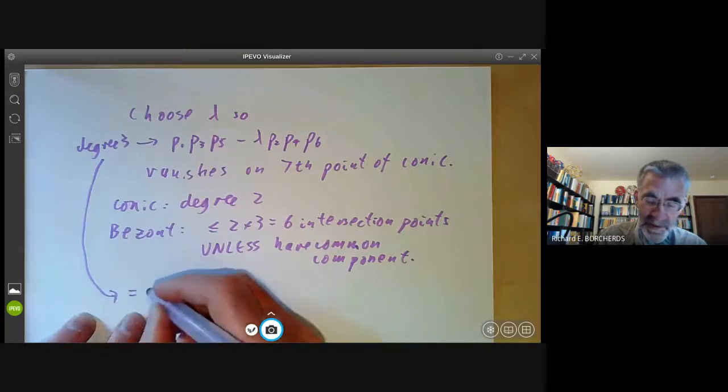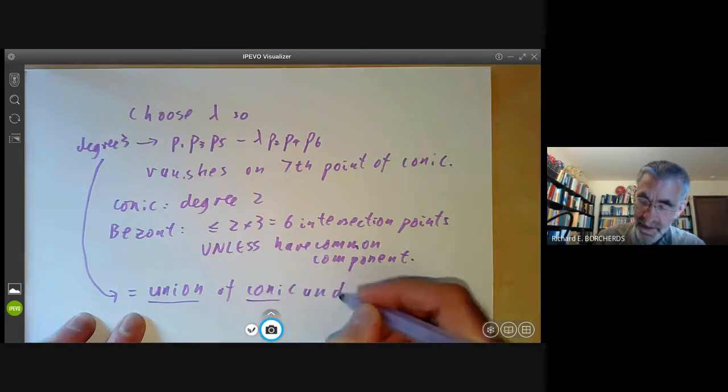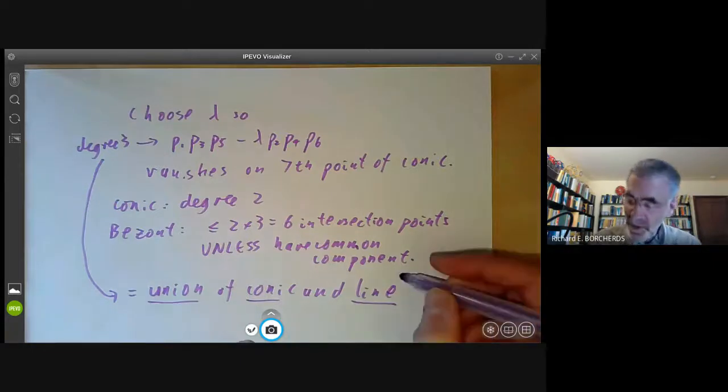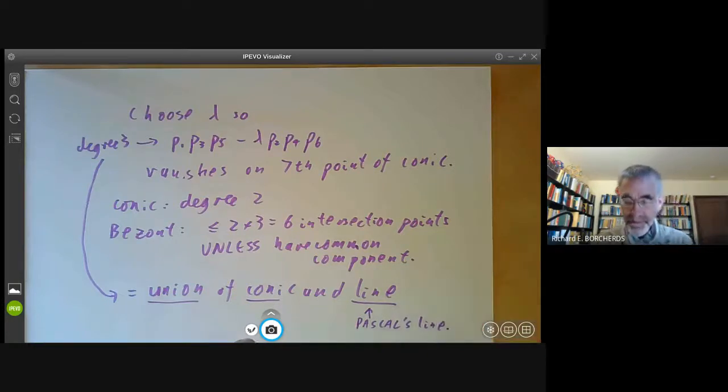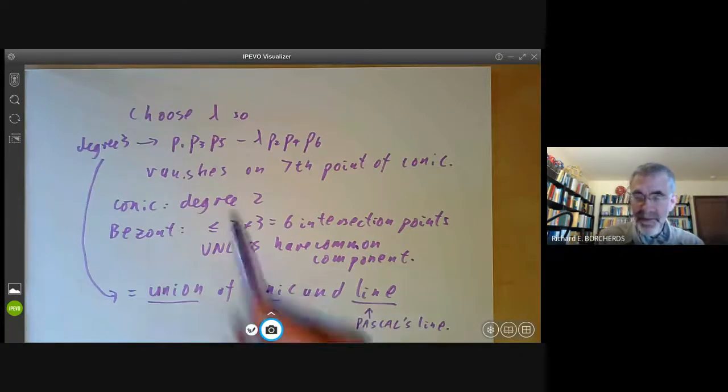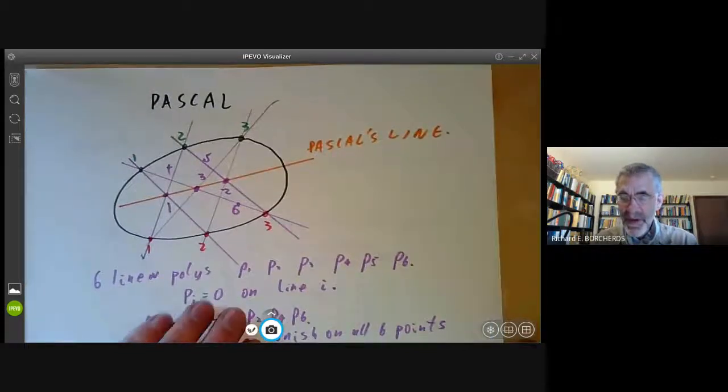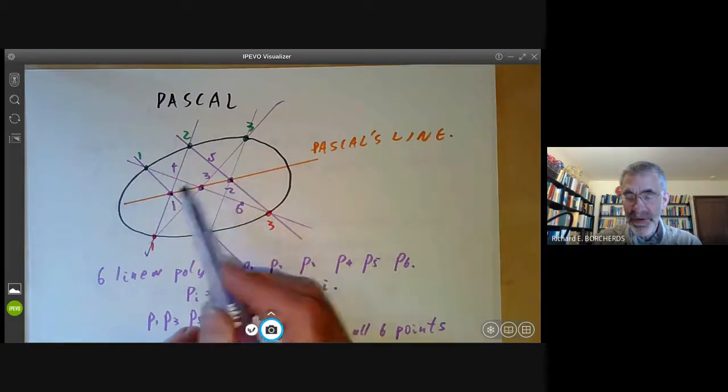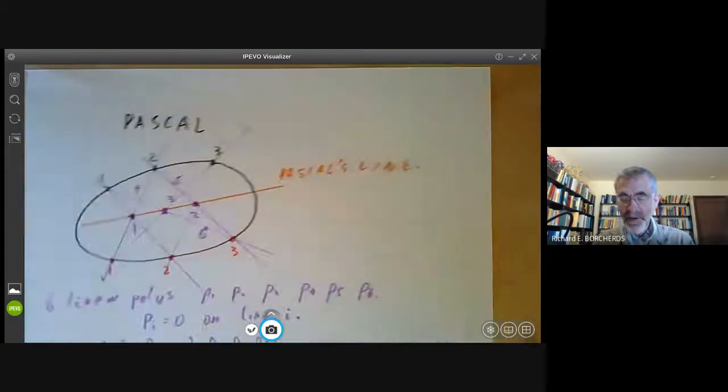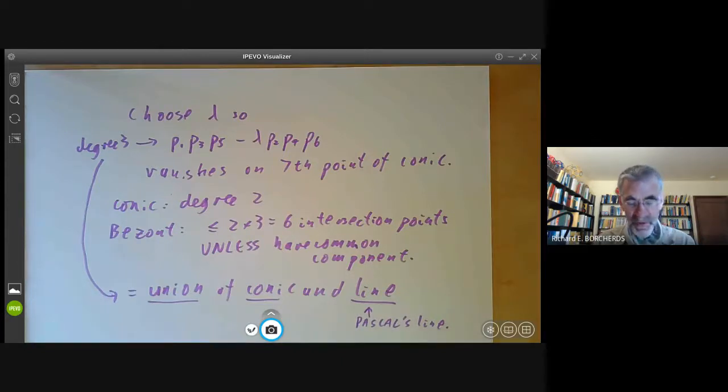So this degree three curve is equal to the union of a conic and a line. Well, this line will obviously be Pascal's line. Because, for example, if we go back to Pascal's theorem, we notice that P1, P3, P5 and P2, P4, P6 both vanish on all these three points. So these three points must be on the degree three curve. And since they're not usually on the conic, they must be on the line. So this gives a proof of Pascal's theorem using Bezout's theorem from algebraic geometry.